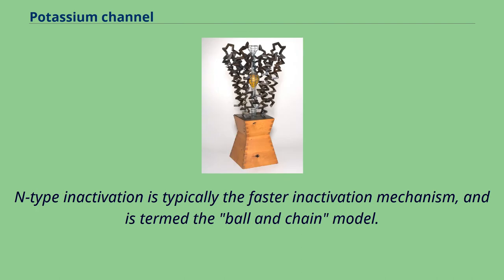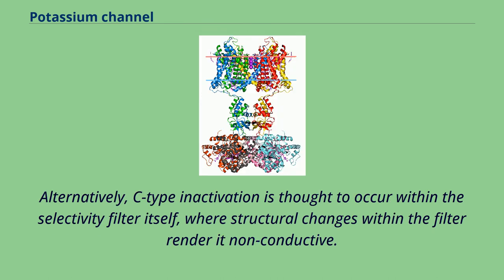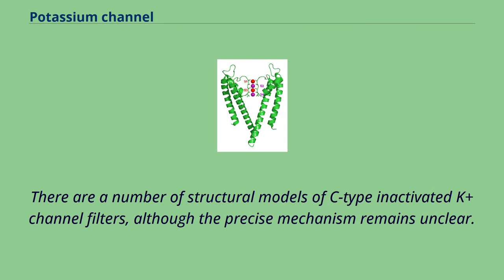N-type inactivation is typically the faster inactivation mechanism and is termed the ball and chain model. It involves interaction of the N-terminus of the channel, or an associated protein, which interacts with the pore domain and occludes the ion conduction pathway like a ball. Alternatively, C-type inactivation is thought to occur within the selectivity filter itself, where structural changes within the filter render it non-conductive. There are a number of structural models of C-type inactivated K+ channel filters, although the precise mechanism remains unclear.